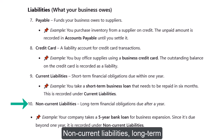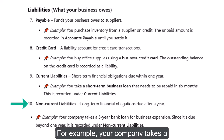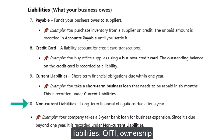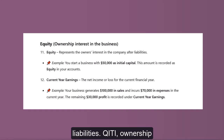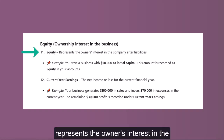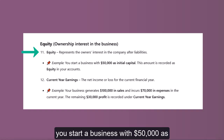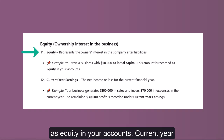Non-current Liabilities: long-term financial obligations due after a year. For example, your company takes a five-year bank loan for business expansion. Since it's due beyond one year, it is recorded under non-current liabilities. Equity: represents the owner's interest in the company after liabilities. For example, you start a business with $50,000 as initial capital — this amount is recorded as equity in your accounts.